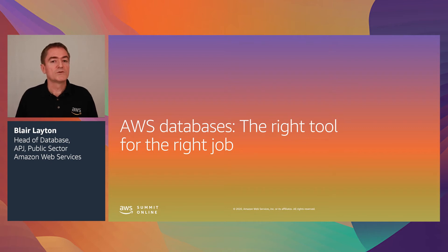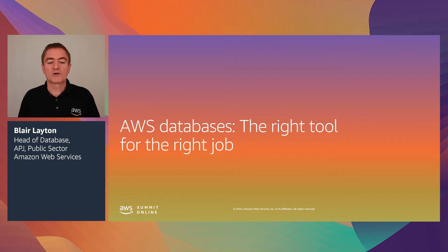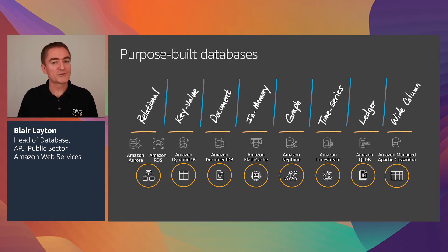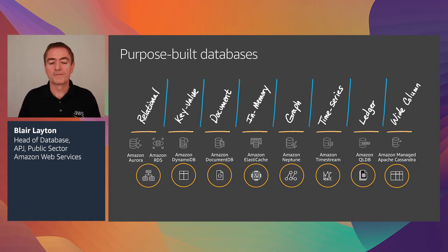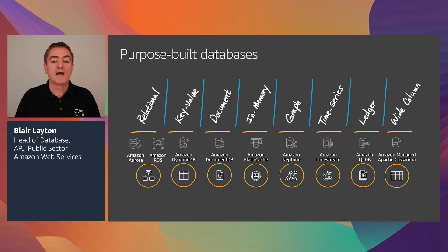What we really want you to do is look at the use case and choose the right technology. To help with that, we've defined a number of different categories: relational, key-value, document, in-memory, graph, time series, ledger, and wide column. At AWS we have a series of different databases matching each of these types of technology, and we're going to go through each one to give you a quick overview of what each is all about.